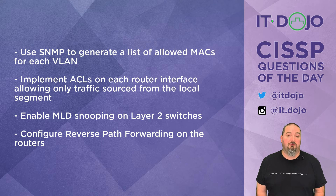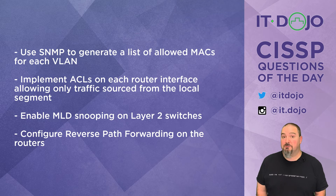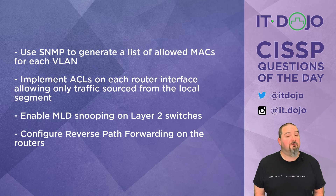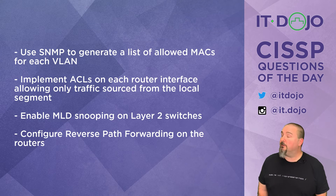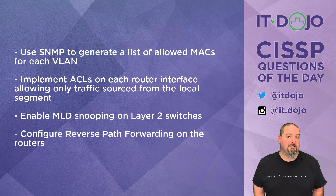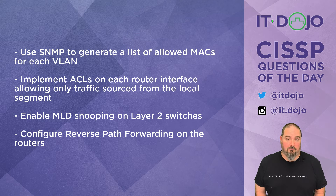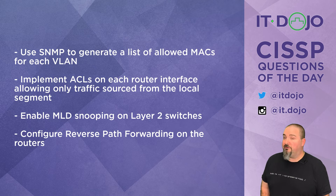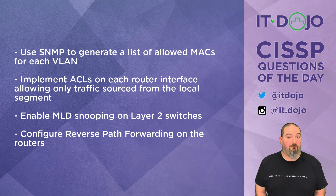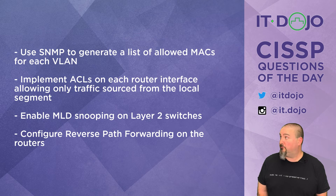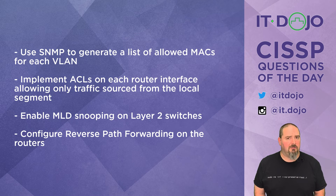Choice three says to enable MLD snooping on your layer-two switches. That sounds impressive — MLD snooping is Multicast Listener Discovery snooping, typically associated with IPv6. In IPv4 we called it IGMP snooping. However, MLD snooping helps you efficiently forward multicast traffic in a layer-two topology — it has nothing to do with preventing spoofed IP packets. So no, that's not the answer.